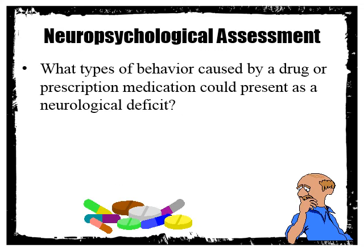A reflection question: what types of behavior caused by a drug or prescription medication could present as a neurological deficit? For example, antipsychotic medications — also known as neuroleptics — can have tranquilizing effects and slow down cognitive processing. Benzodiazepines, which are considered basically like liquid forms of alcohol by some psychiatrists, can also alter your cognitive functioning. In addition, some medications for medical issues can have neurological side effects.